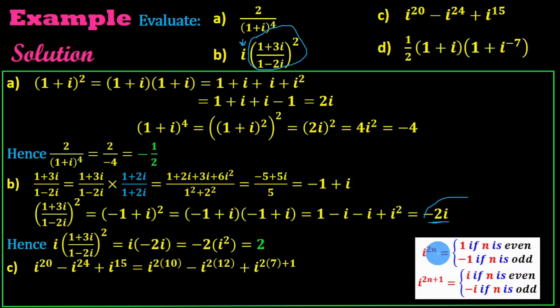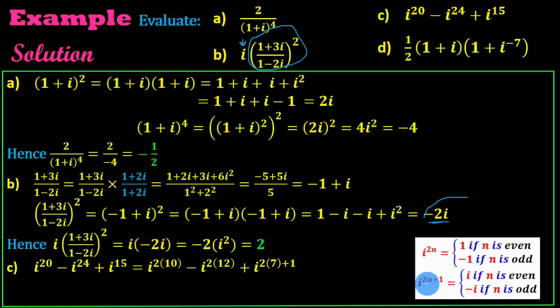i to the power of 2n is equal to 1 if n is even, and equal to minus 1 if n is odd. i to the power of 2n plus 1 equals i if n is even, and minus i if n is odd.